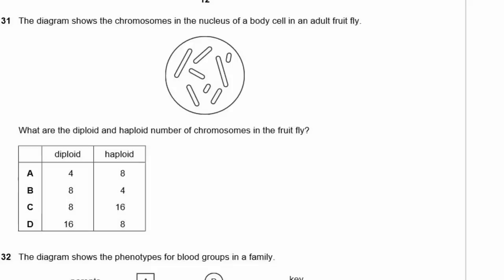Question 31: The diagram shows chromosomes in the nucleus of a body cell in an adult fruit fly. Counting: one, two, three, four, five, six, seven, eight — the diploid number is 8. The haploid number is half the diploid, which is 4. The answer is B.